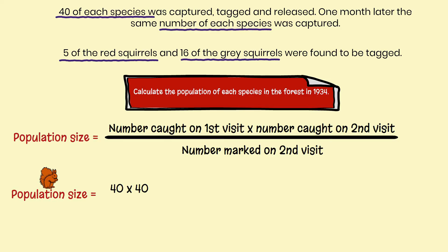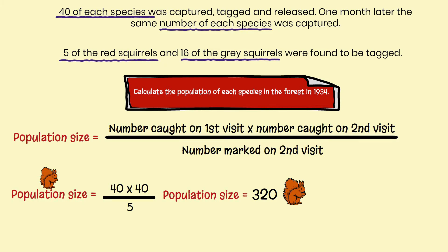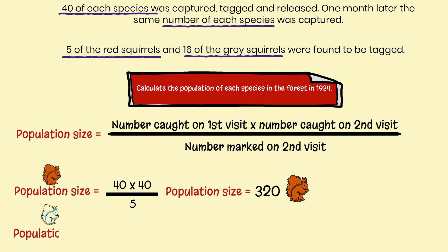40 were caught on the first visit and 40 were caught on the second visit, and the number marked on the second visit were five red squirrels. So your population size, just with your calculator, is 40 × 40 ÷ 5, which is 320. So there were 320 red squirrels in 1934.